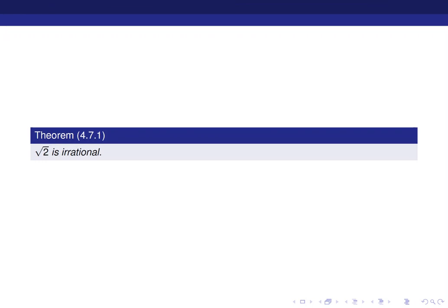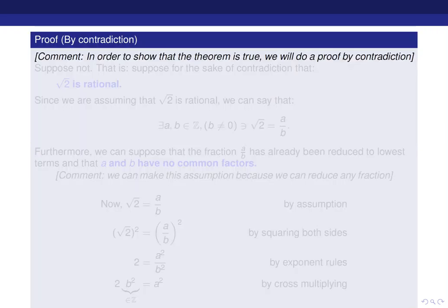Keep in mind that this statement is not an if-then statement. So I cannot do a proof by contrapositive here. So what I have to do is prove this with proof by contradiction. So what I'm going to do is suppose not, meaning I'm going to suppose, for the sake of contradiction, that square root of 2 is rational.